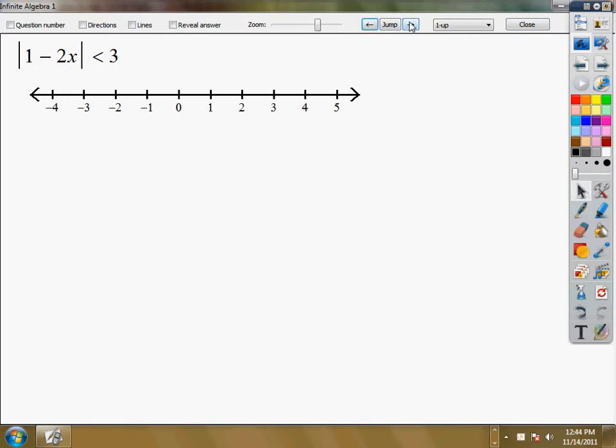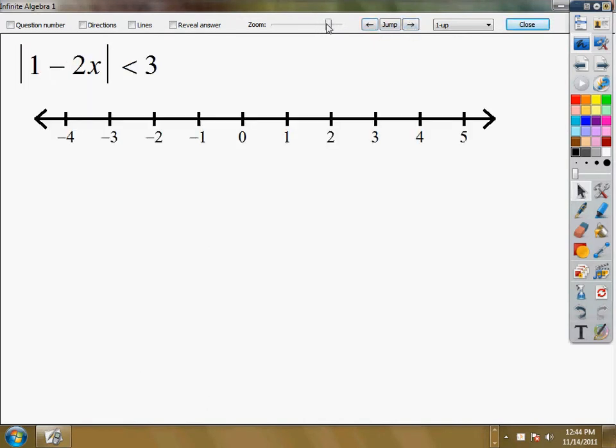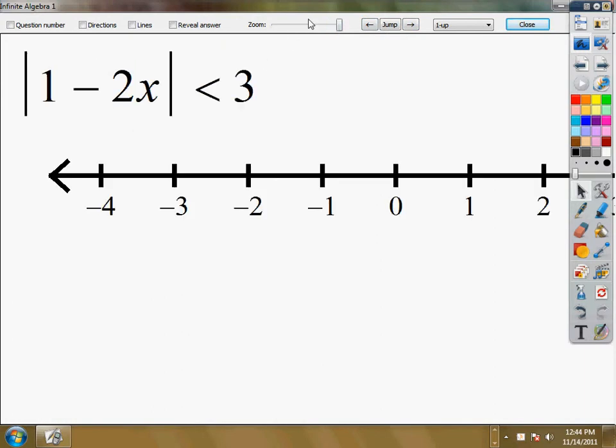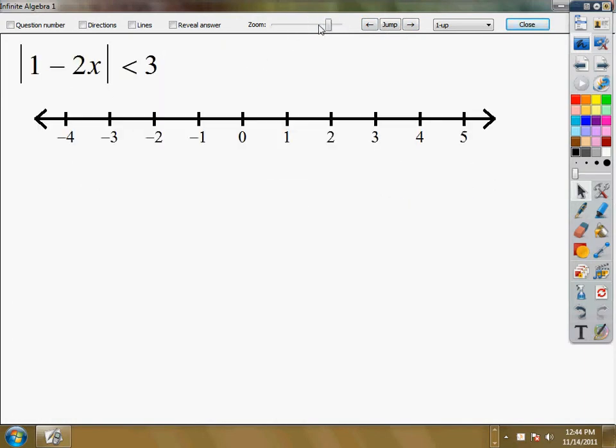For this first section, we have what's an absolute value inequality. You can tell because it's got the lines showing that it's absolute value. When I have absolute value, I have to solve really two problems at the same time. I'm solving one that keeps the absolute value as it's shown with the inequality and number the same.